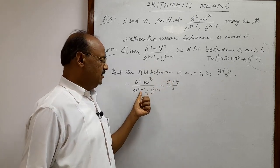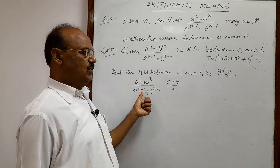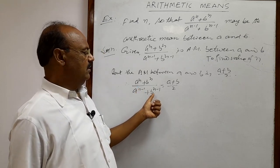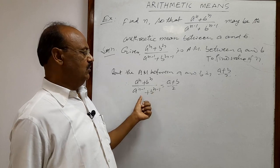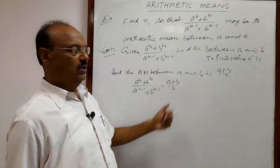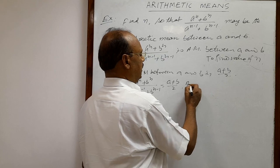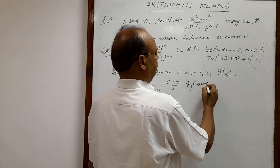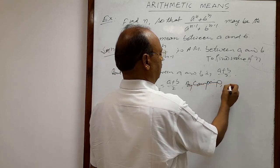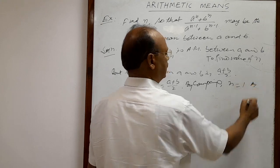If n is equal to 1, then n minus 1 is 0. So a to the power 0 is equal to 1, and similarly b to the power 0 is equal to 1. So 1 plus 1 is equal to 2. Therefore, by comparing both sides we get n is equal to 1. This is the answer.